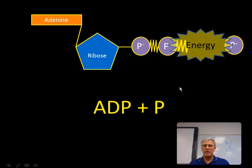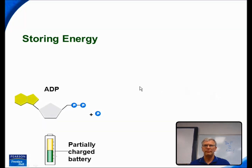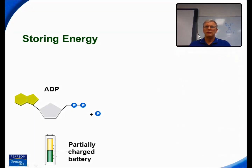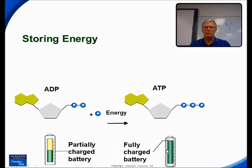When this third phosphate group is broken off, we're left with ADP, adenosine diphosphate, and a free phosphate group. We can consider ADP and ATP kind of like a rechargeable battery. ADP has a little bit of energy in it — it's like a partially charged battery. If we plug in a rechargeable battery, it will completely charge up, and that's what ATP is analogous to. ATP is like a fully charged battery. When that third phosphate group is connected, we now have much more energy stored in this molecule than we had with ADP.